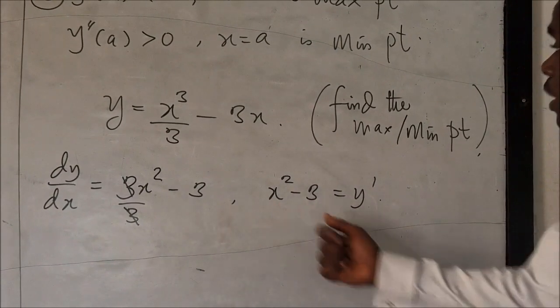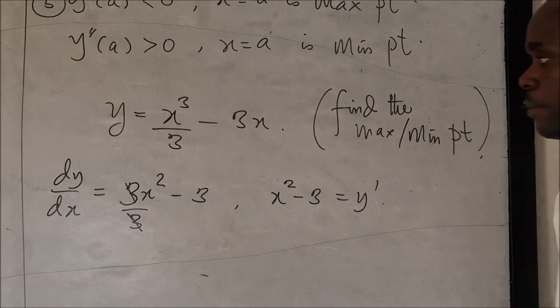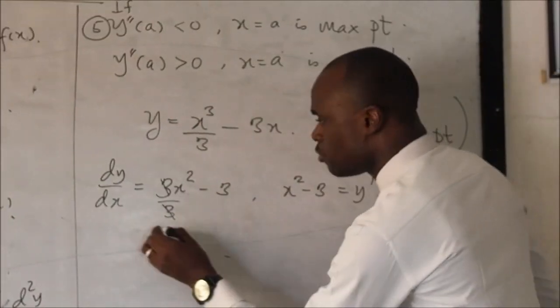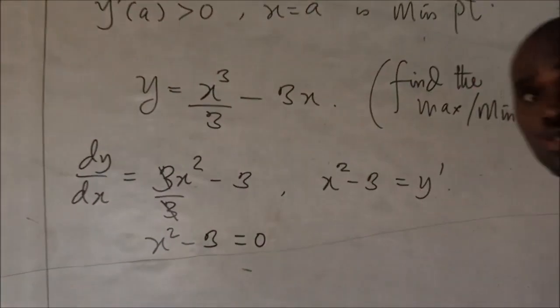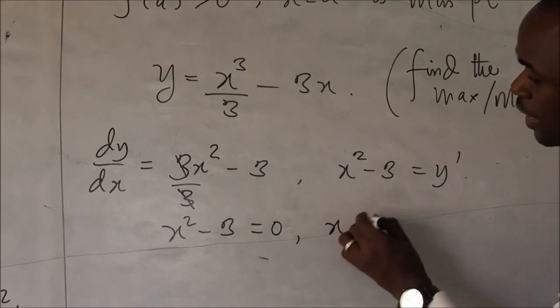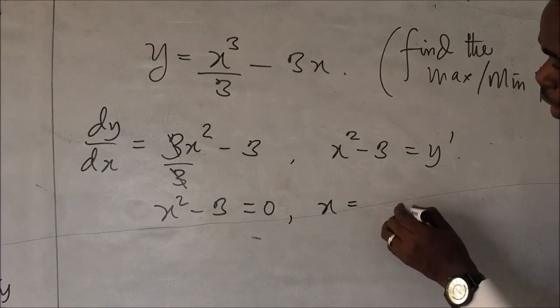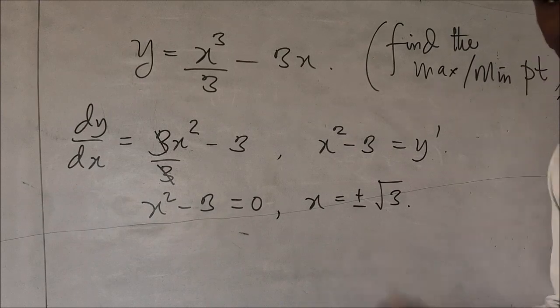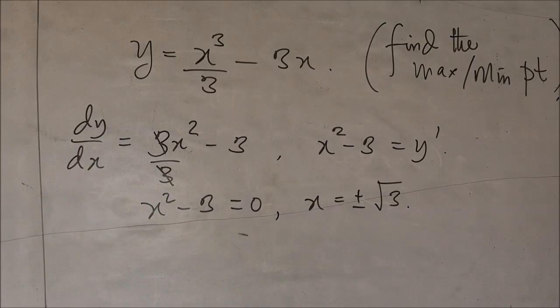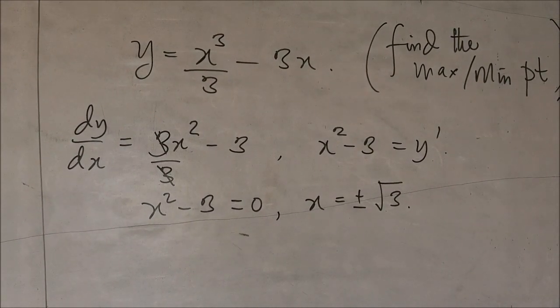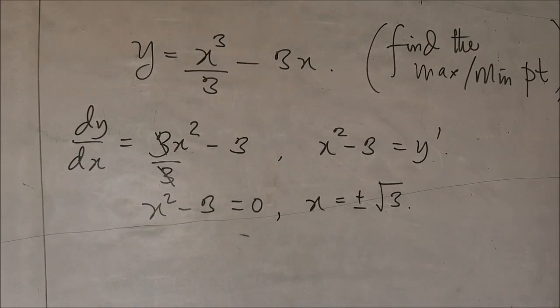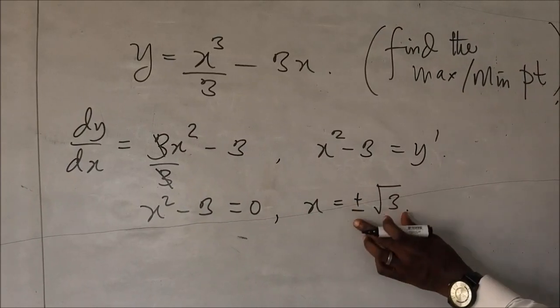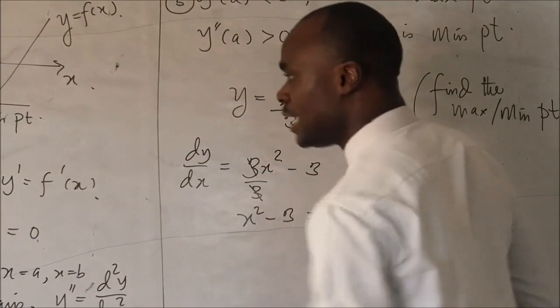Yeah. So, this is x squared minus three as our y prime. And the next step says we should equate this to zero. So, let's do that. We are going to have x squared minus three equals to zero. And we are going to have x to be equals to plus or minus square root of three. Okay. I hope you're cool with that. You can refer to my video on quadratic equation. Solved that for you. So, these are the points we have.